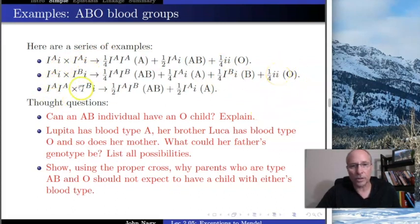What about this? This one's easy. If we have this individual who's type A but they're homozygous, they can only give a big I^A. And this individual, half the time will give a big I^B, and half the time will give a little i. So half the time we get AB, and half the time we get A, little i, which is type A.